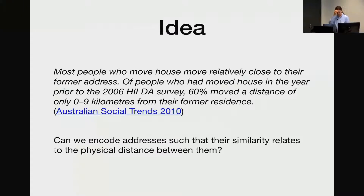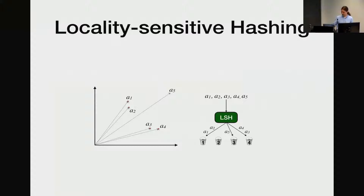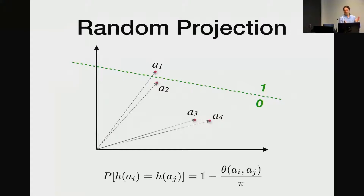So what tools are around? The obvious candidate is locality-sensitive hashing. This is a technique that takes multi-dimensional inputs and maps them into a one-dimensional value — like buckets. You throw in a multi-dimensional vector and it ends up in a bucket. The most simple locality-sensitive hashing is a random projection: you span a projection plane through your vector field and map everything on one side to one and on the other side to zero.